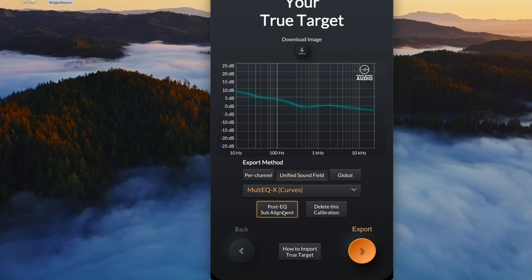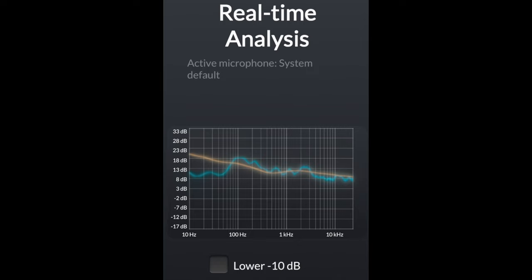My name is Joe and in part one of this video I talked about target curves and why a generic target curve wouldn't work. I went into some definitions about the transition region and directivity index. I'll be talking a little bit more about my Magic Beans app and how we approach the situation and how we can arrive at a target curve that is more conducive to what you probably want for your room.